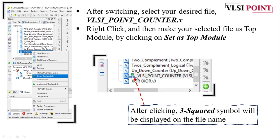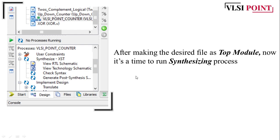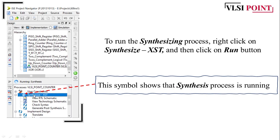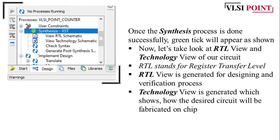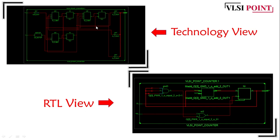After making the top module you are ready to perform the synthesis process. Right click on the 'Synthesize XST' option, click run, and the processing will start. Once synthesis completes successfully you will get a green check mark on synthesize XST. You will then get the RTL view and the technology view. RTL stands for register transfer level and is generated for design and verification. The technology view shows how the design circuit will be fabricated on the chip.